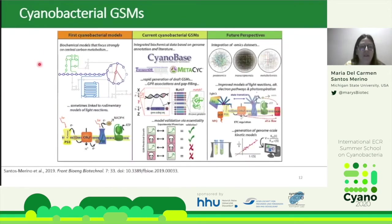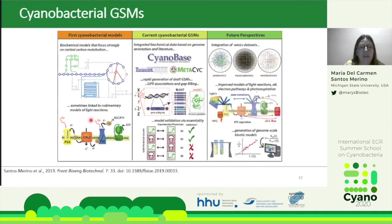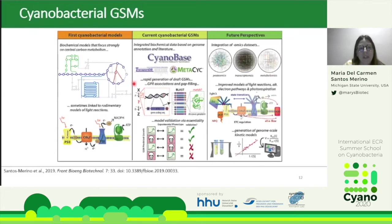This slide shows how cyanobacterial genome-scale models have been developed over time. Early models were very basic, covering only central carbon metabolism and rudimentary light reactions. Recent models have improved by incorporating genome annotation, literature, and databases such as CyanoBase, transport databases, and MetaCyc. Genome-scale models can now be generated quickly using draft-generation tools, though these drafts still need manual curation.